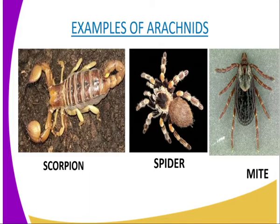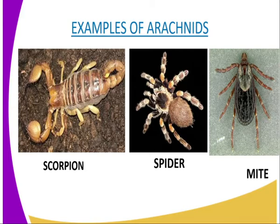If you look at either the scorpion or the spider, actually on the ventral view, we can see the chelicerae. Their function is to produce a poison, whereby it will paralyze their prey. Actually they are very dangerous.